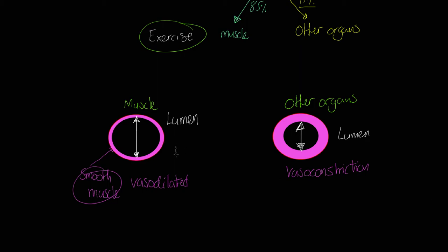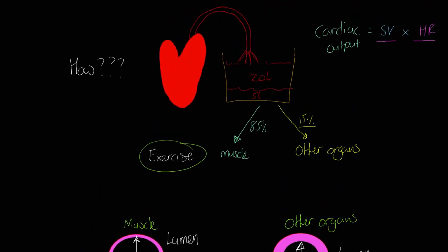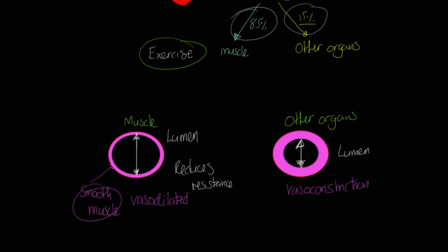Now the point is the following. Here, this reduces resistance, which means that more blood will flow through it. And this, of course, increases resistance, which means less blood will flow through it. So we can now see at least one of the reasons why a greater proportion of blood is delivered to the muscle during exercise and to the other organs during exercise.